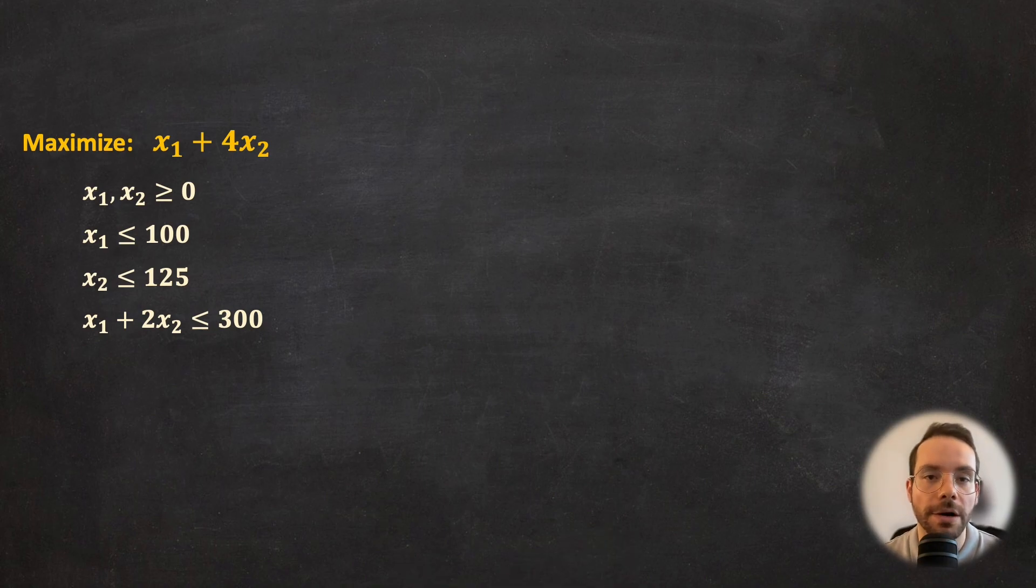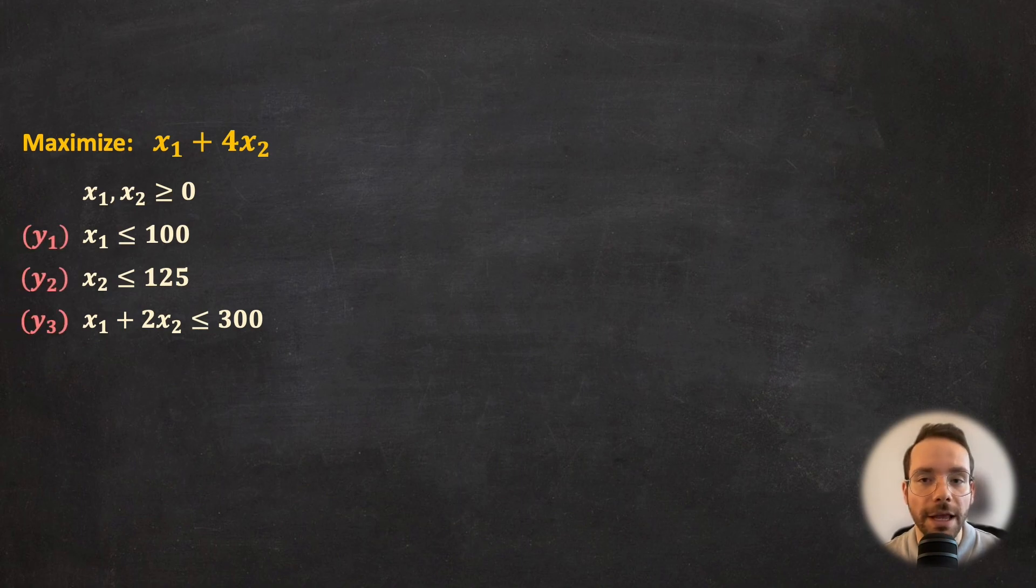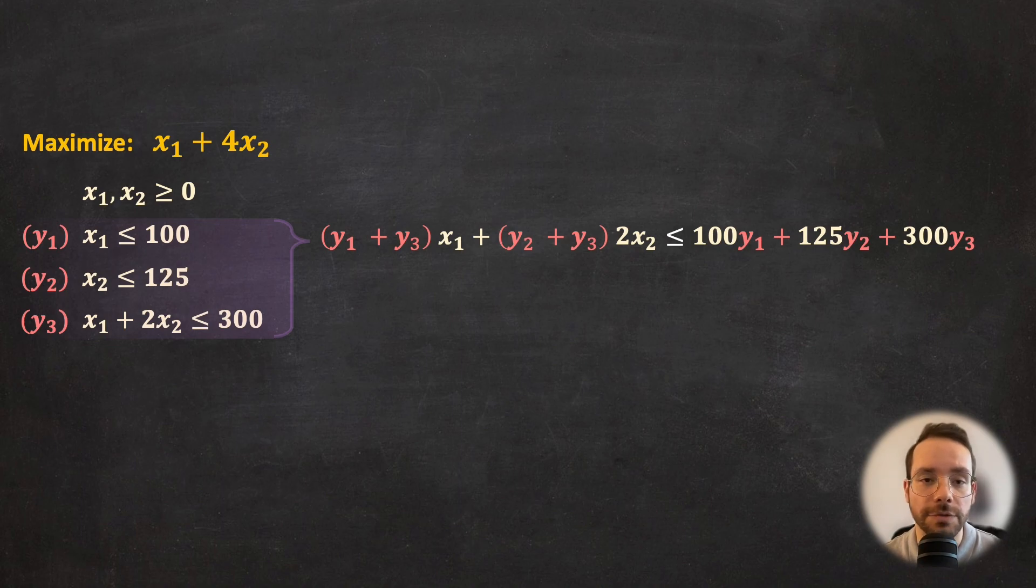What I'd like to do here is to systematize the approach that we used in the previous example and come up with a general framework that can be used for any optimization problem to produce a tight upper bound on the objective function. So I'm going to start here by defining a multiplier for each of the constraints. After we multiply and add, we obtain a new valid inequality of this form. Now, we need the left-hand side of this inequality to be an upper bound on the objective function.